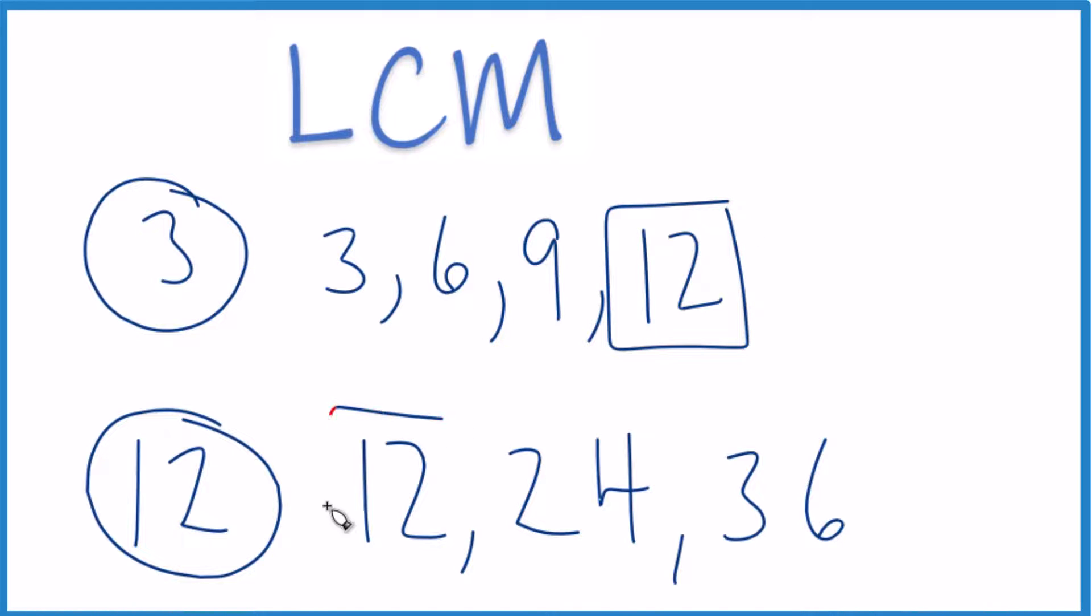This is the multiple of 3 and 12 that is in common to those numbers. Least common multiple.